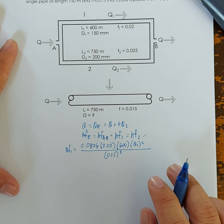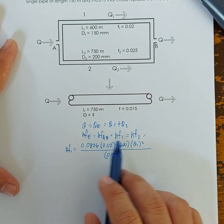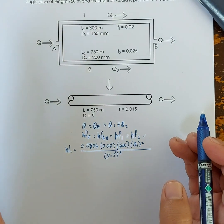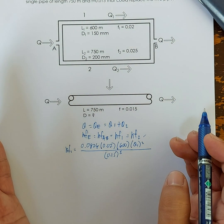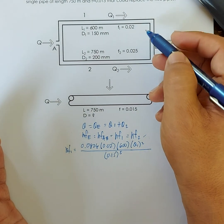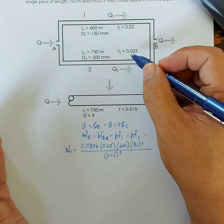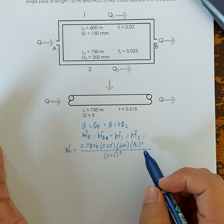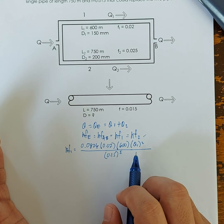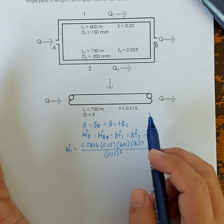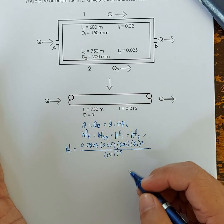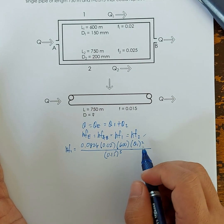Since all head losses are equal, we express each discharge in terms of the common head loss HF. We manipulate the equation to isolate Q1: Q1 equals the square root of D1 raised to the 5th power times HF, divided by 0.0826 times F1 times L1.